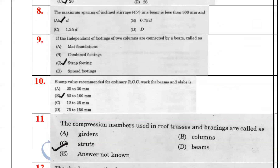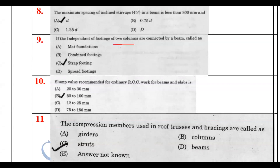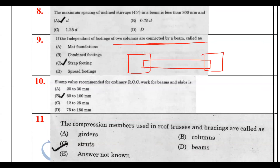When two independent footings are connected, the two columns are joined by a beam — a strap beam — connecting the two footings together.